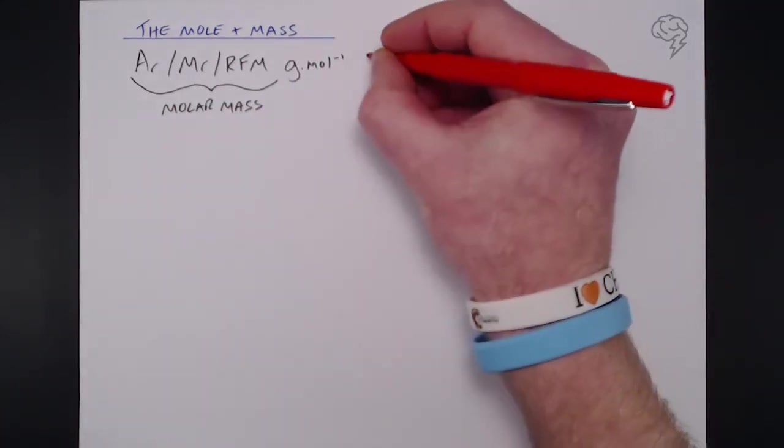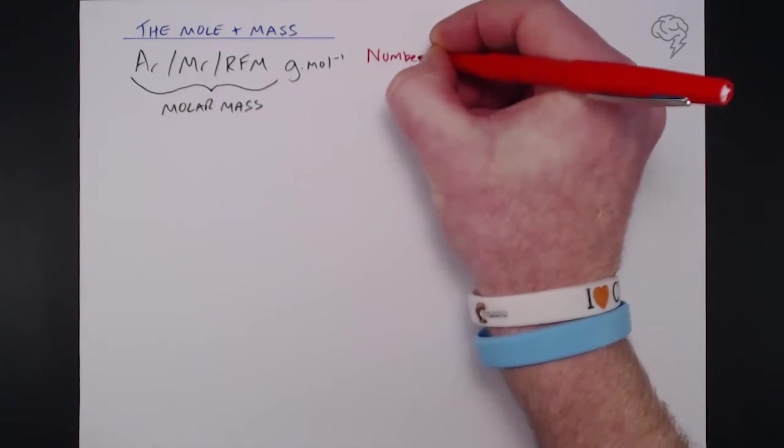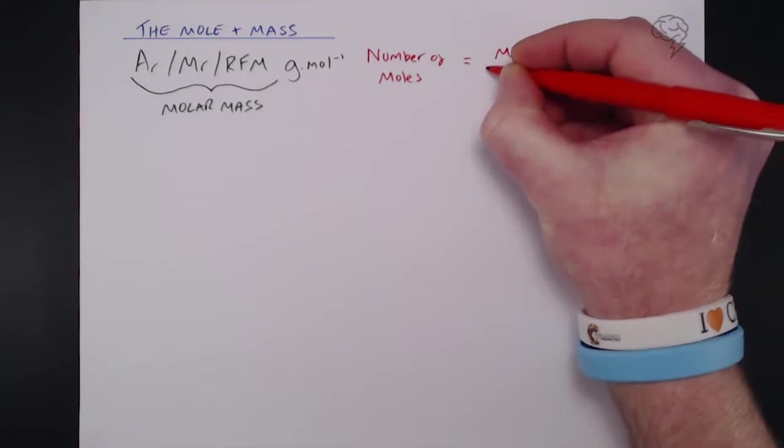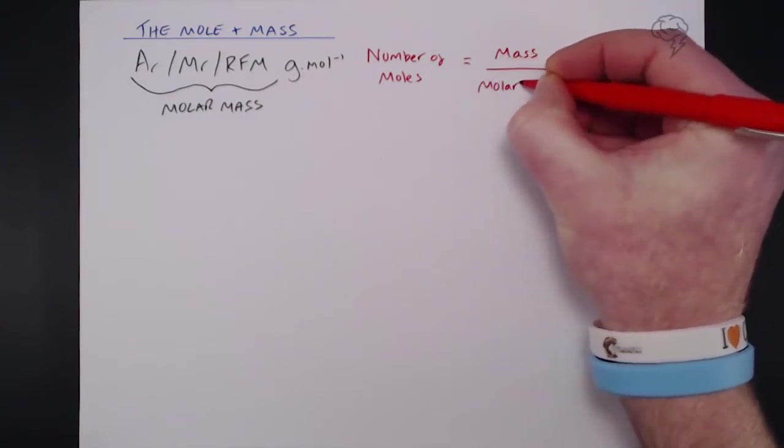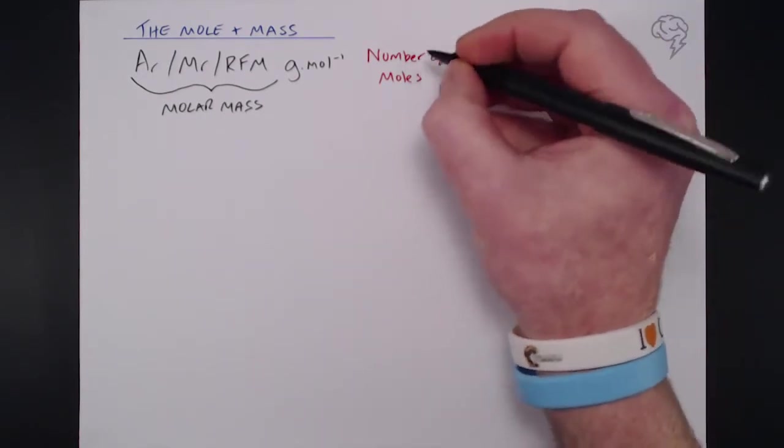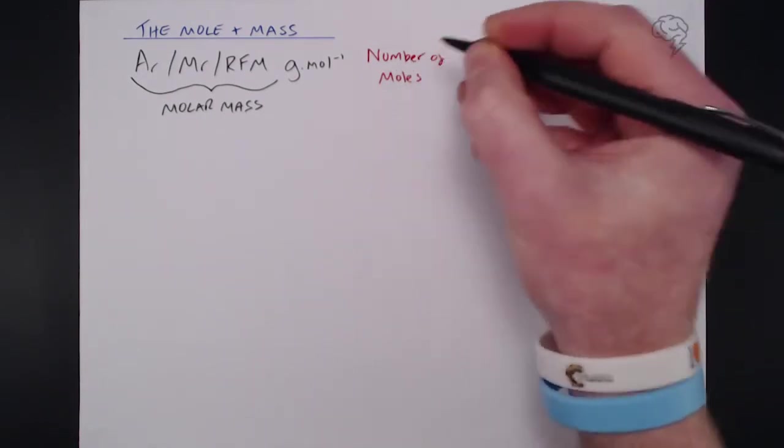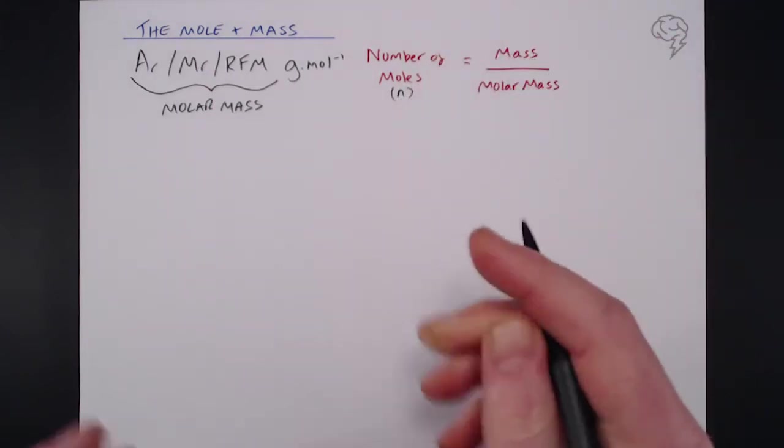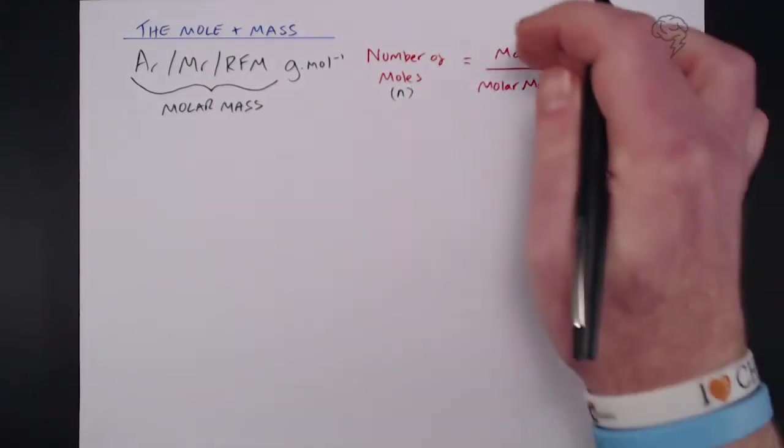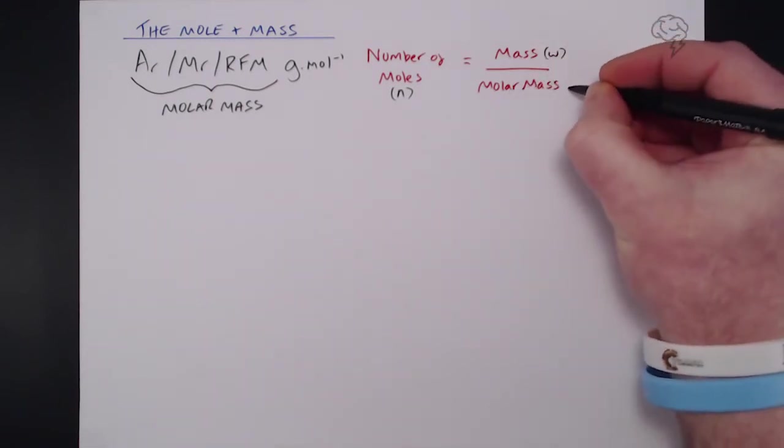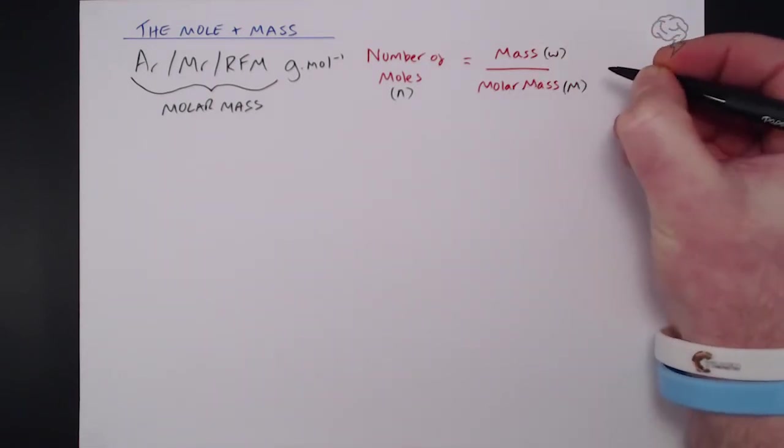So the first thing we need to do before we get started is look at the equation itself, and that equation is: number of moles equals mass over molar mass. There's a few important things we need to note here. I'm going to be using these following terms: rather than write it out in full each time, we're going to use number of moles as n, mass I'm going to use W, and molar mass I'm going to use as a capital M.